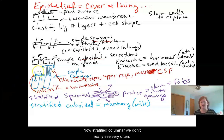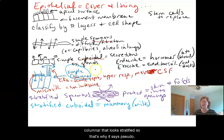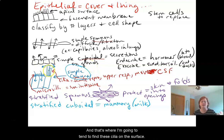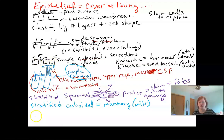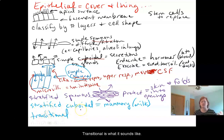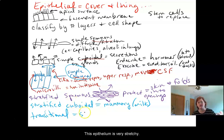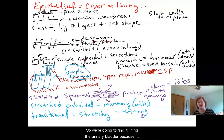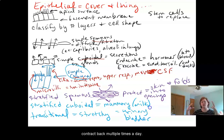Stratified columnar we don't really see very often. Pseudostratified columnar is basically simple columnar that looks stratified — that's why it's called pseudo, because it's kind of fake stratified — and that's where you tend to find cilia on the surface. The last kind is transitional, which is very stretchy, and we find it lining the urinary bladder because that structure has to stretch, expand, and contract back multiple times a day.